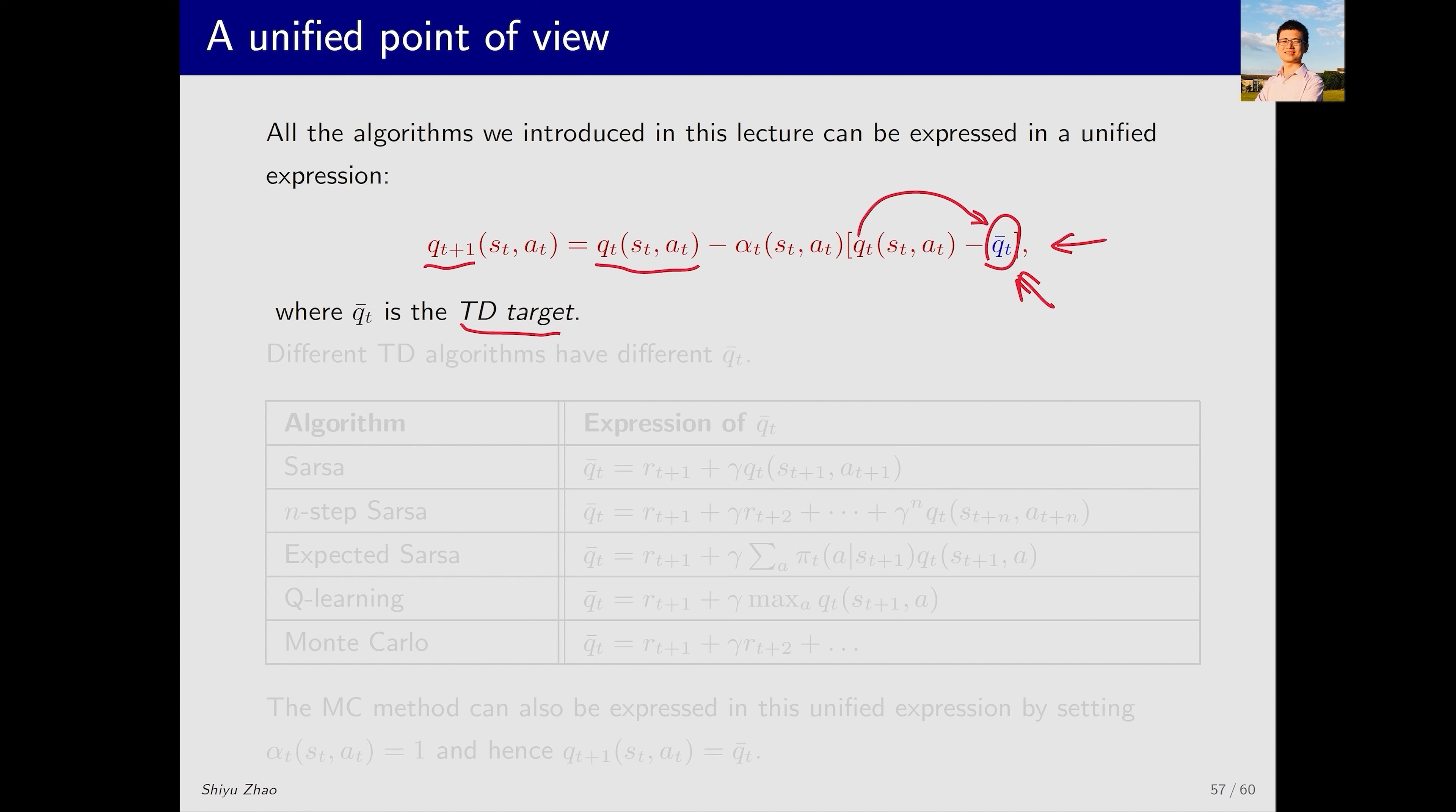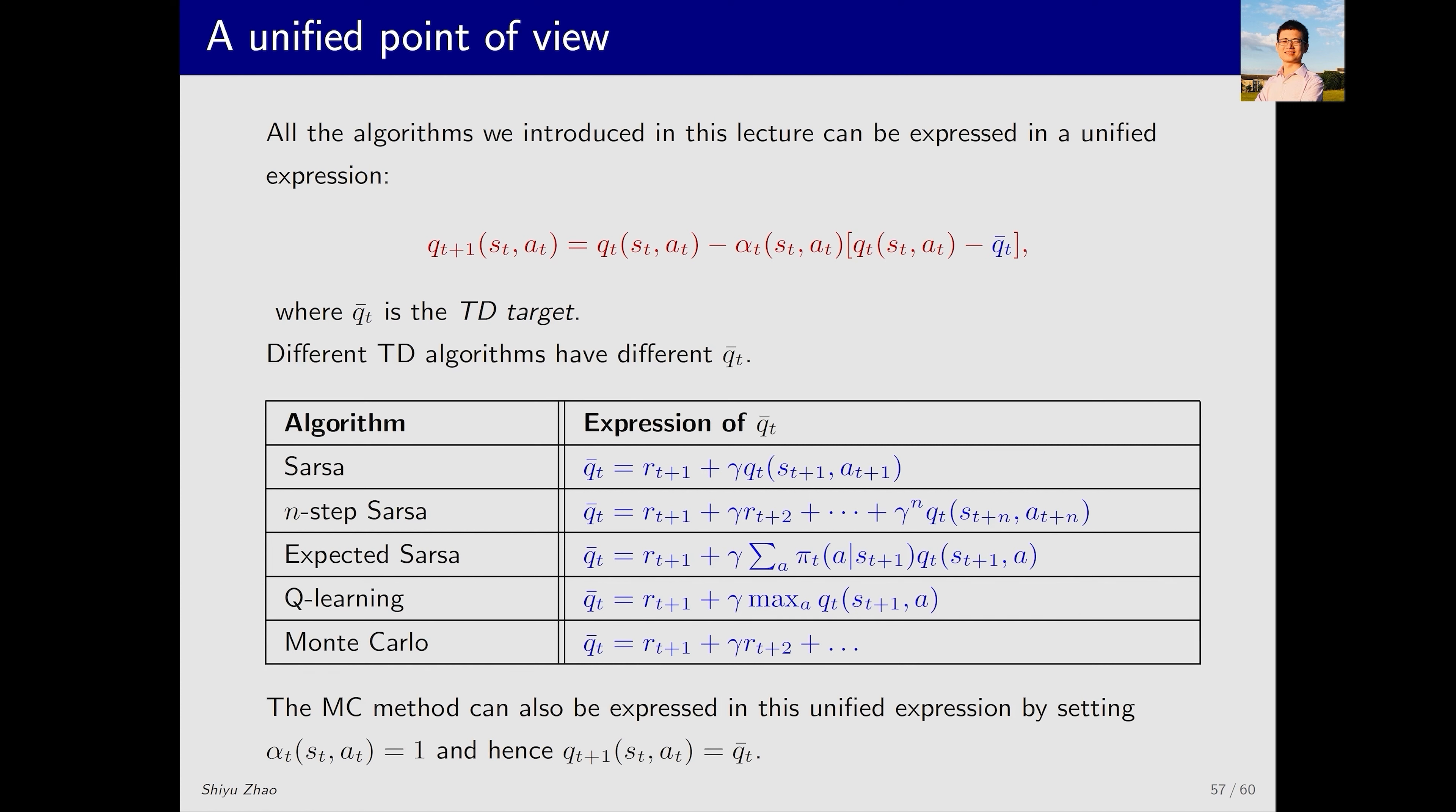The difference between them is called the TD error. It aims to make Q_T closer to Q̄_T and hence reduce the TD error. The differences between different TD algorithms lie in their TD targets.